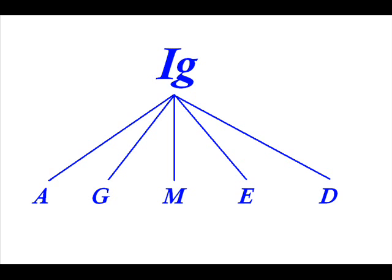We'll talk a little bit about immunoglobulin A. It is mostly mucosal immunity. Immunoglobulin A is secreted and can be found in tears, saliva, and colostrum, which is breast milk.